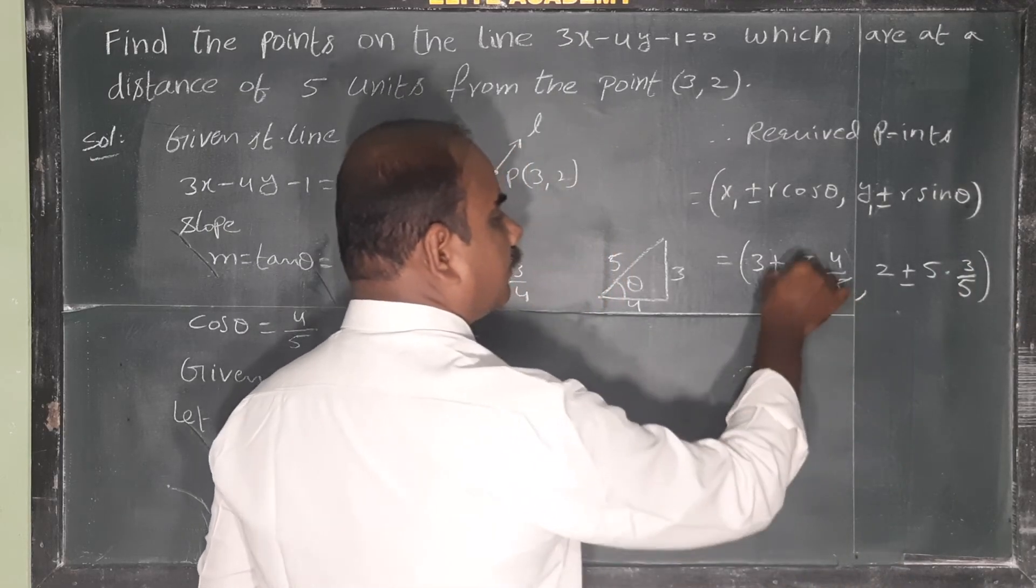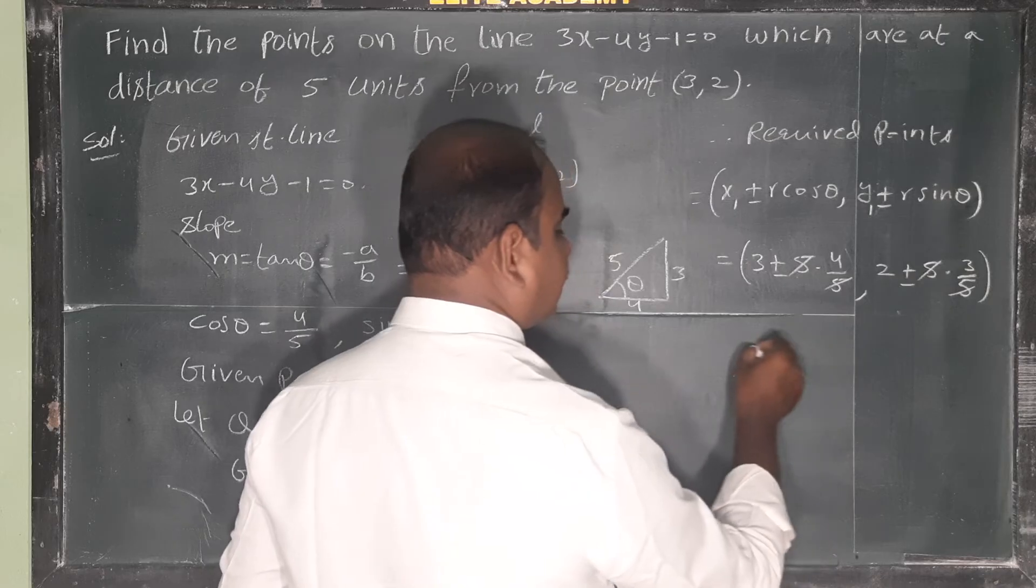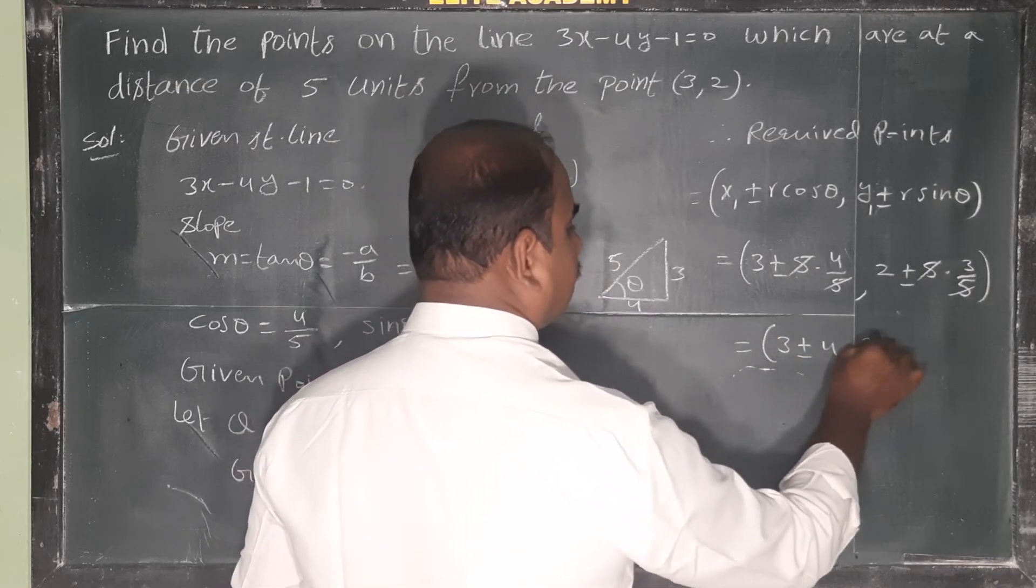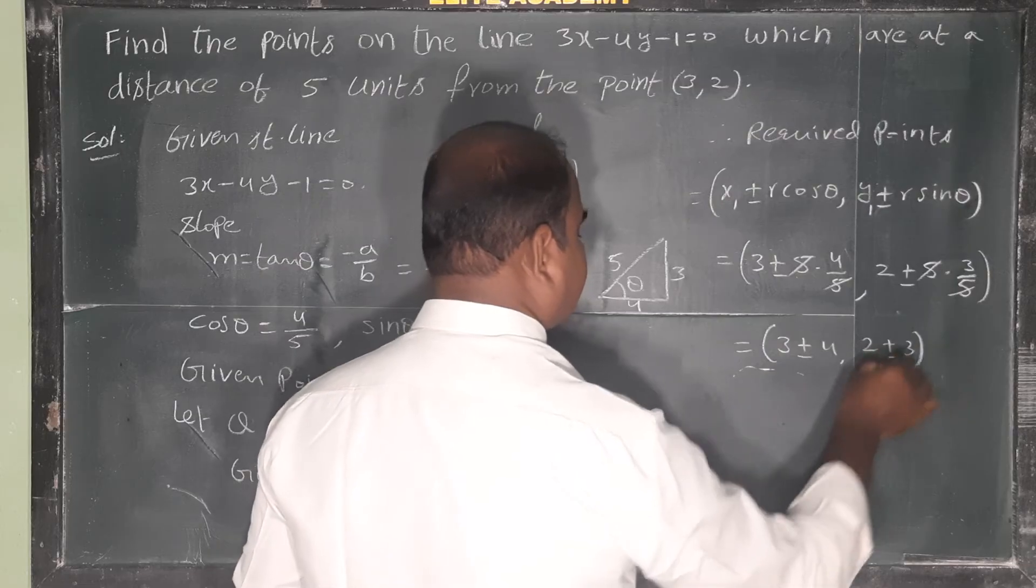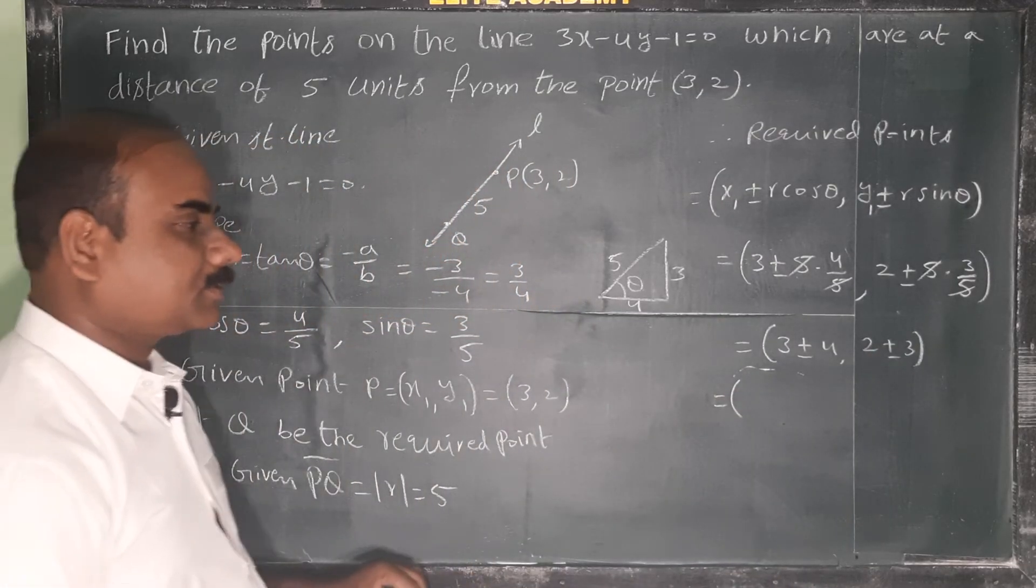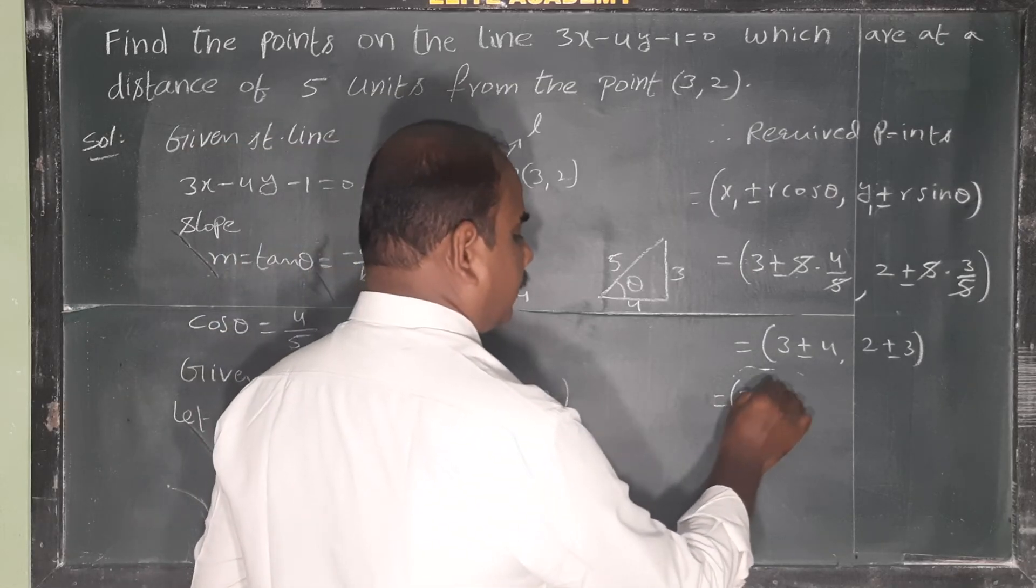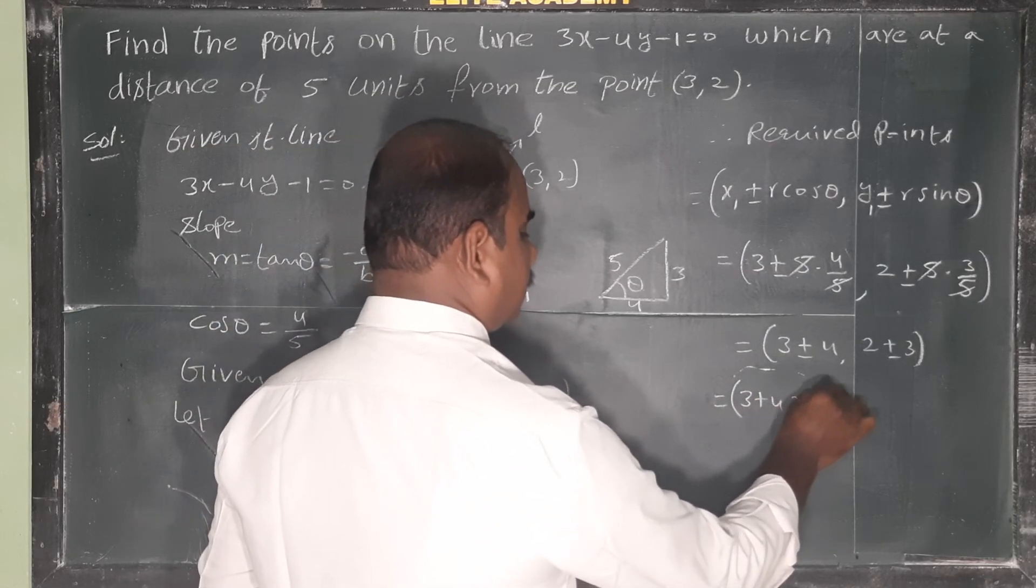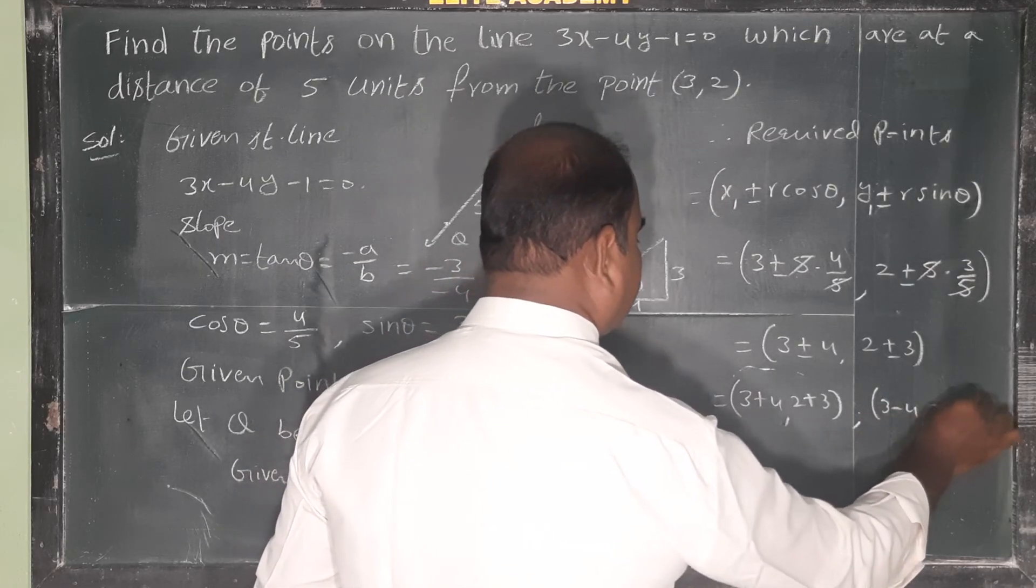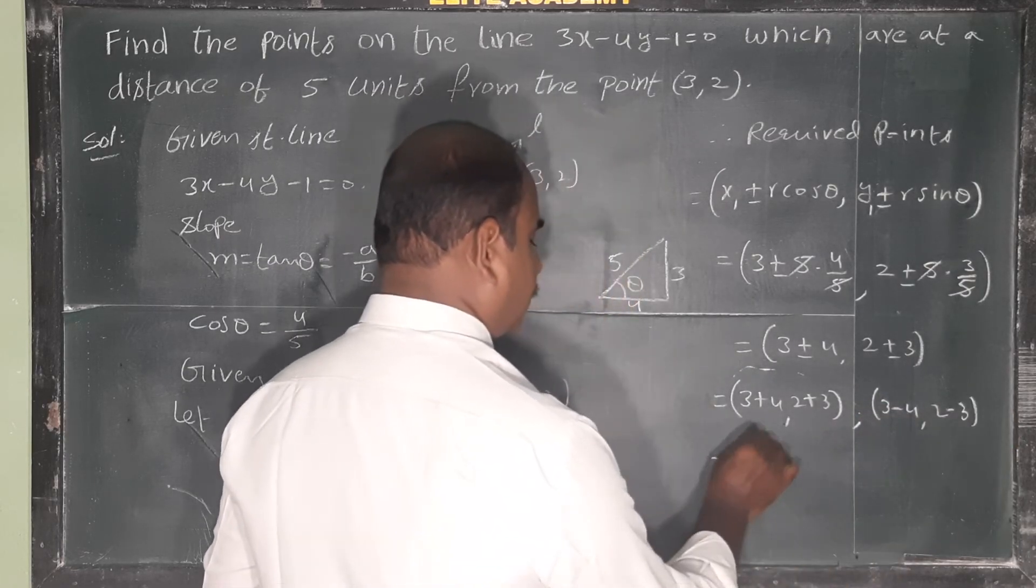5 and 5 cancel, here also 5 and 5 cancel. We get 3 plus or minus 4, 2 plus or minus 3. So 3 plus 4, 2 plus 3, comma 3 minus 4, 2 minus 3.